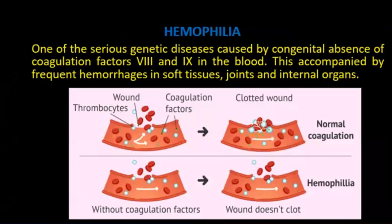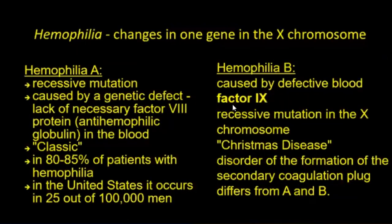Hemophilia is one of the serious genetic diseases caused by congenital absence of coagulation factors 8 and 9 in the blood. These are combined by frequent hemorrhages in soft tissue, joints, and internal organs. Hemophilia involves changes in one gene on the X chromosome. There are hemophilia A and hemophilia B.